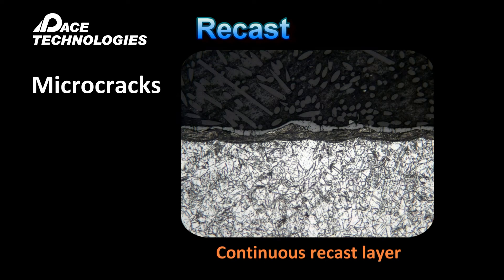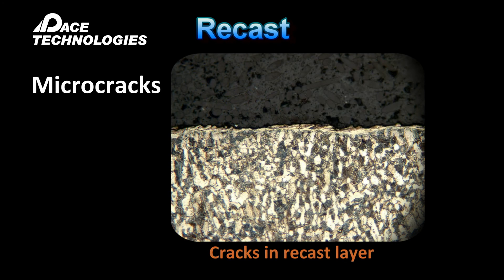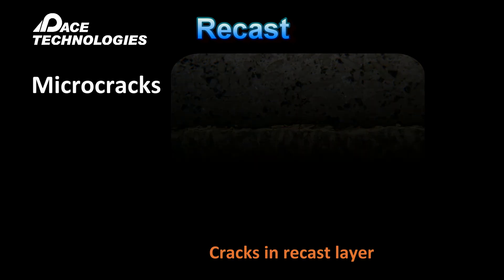The recast layer is made up of molten metal particles that have been redeposited on the surface of the workpiece. Both the heat affected zone and recast layers can also contain micro cracks which could cause stress failures in critical components.